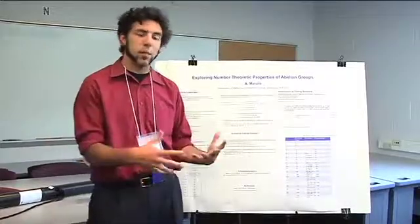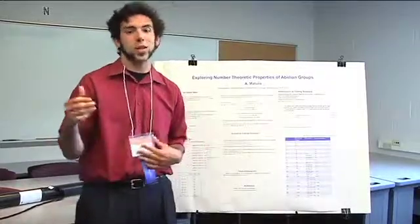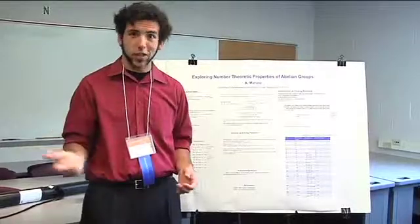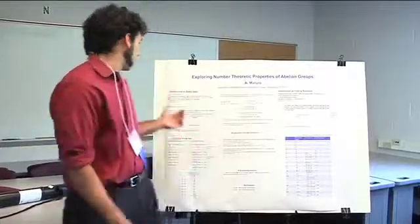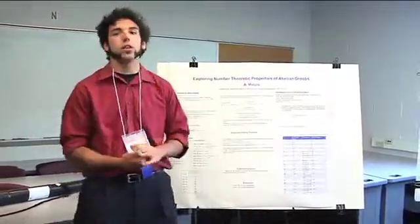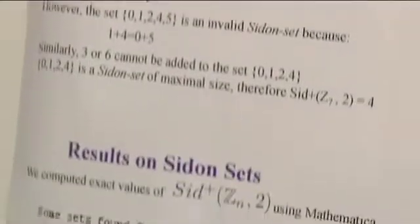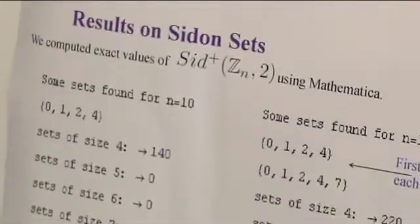So in z sub 7, any two numbers have the sum that is the remainder when divided by 7. So in z sub 7, 5 plus 6, which would be 11, is actually 4, because it's modulo 7. So the property that we're looking at is the sit-on property.